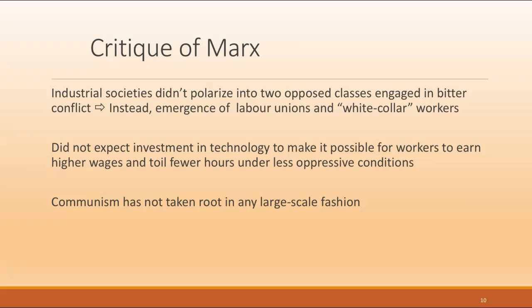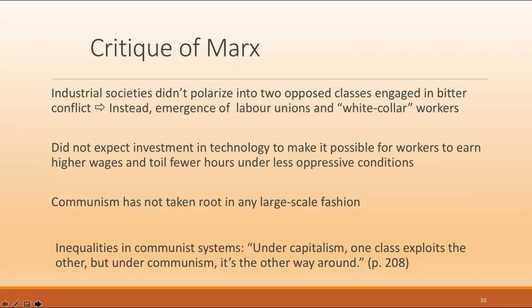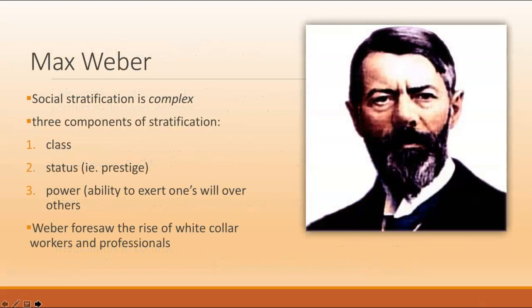Another flaw in Marx's predictions is that even though there have been many experiments in communism, it has not taken root and sustained itself anywhere. China is an interesting example — technically communist, but also the epicenter of global manufacturing for capitalism. Finally, where communism has been tried, social inequality did not fade away as predicted but simply took different forms. There's a joke from Russia in the 1970s: under capitalism, one class exploits the other, but under communism, it's the other way around.